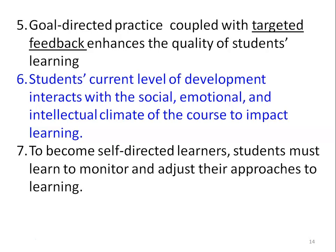Sixth: the student's current level of development interacts with the social, emotional, and intellectual climate of the course to impact learning. The kind of social, emotional and intellectual climate available in the college or classroom will help or hinder the student's learning. Seventh: to become a self-directed learner, the student must learn to monitor and adjust their approaches to learning. As a teacher, we have to help the student in all these areas.